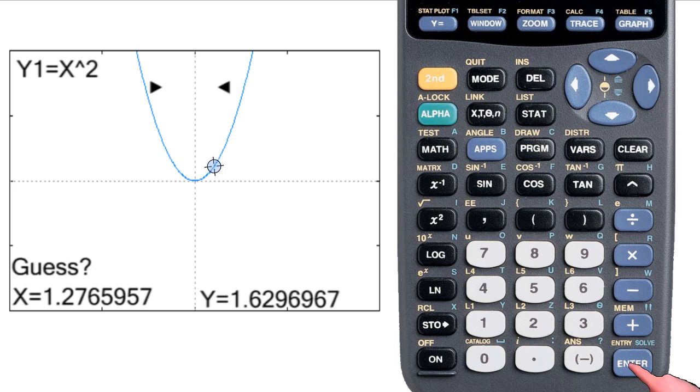It asks if I want to guess, and I hit enter again. It moves the cursor to the minimum, and tells the coordinates in the lower left corner.